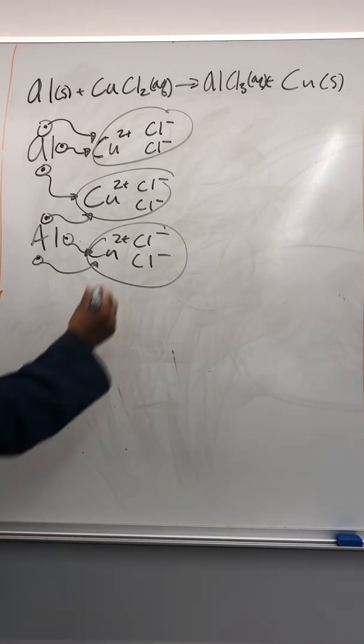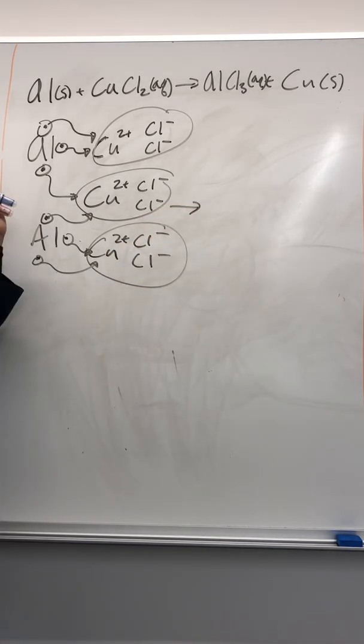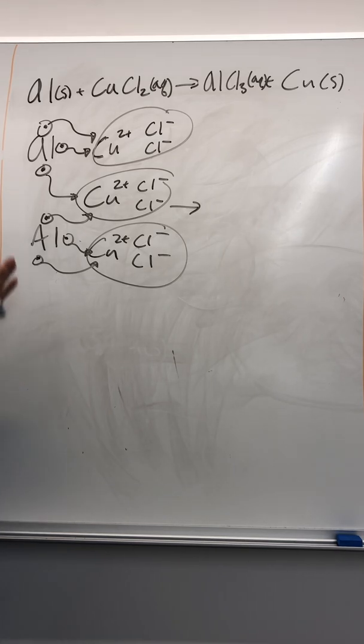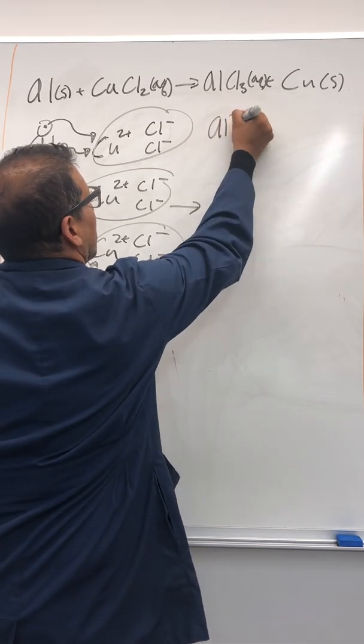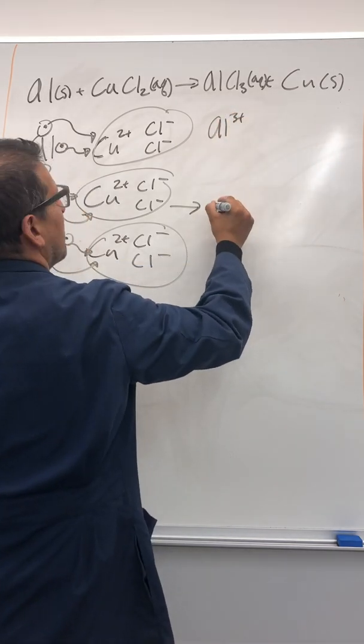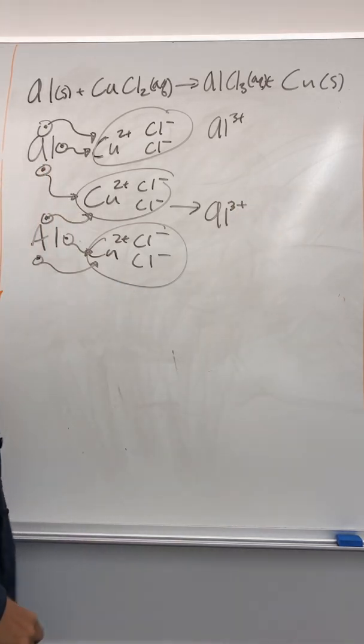So what you make, so these two react to make, well, let's take a look here. Now we have a bunch of aluminum Al three plus ions. Okay. I'm going to draw them both out here. Three plus ions.